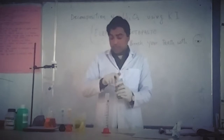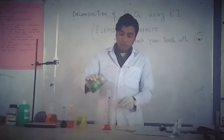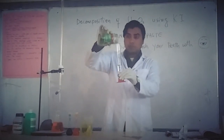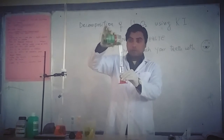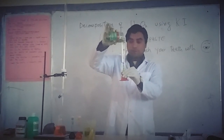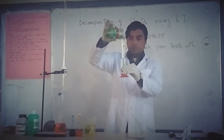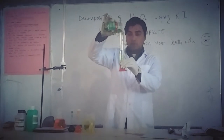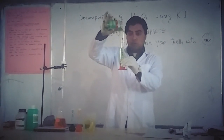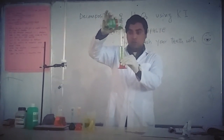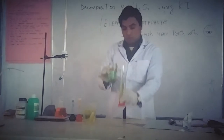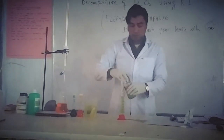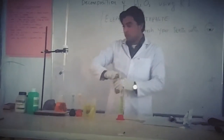We have to add the catalyst. The catalyst is used to speed up the reaction. We will use 20 ml of hydrogen peroxide and proceed with the process.